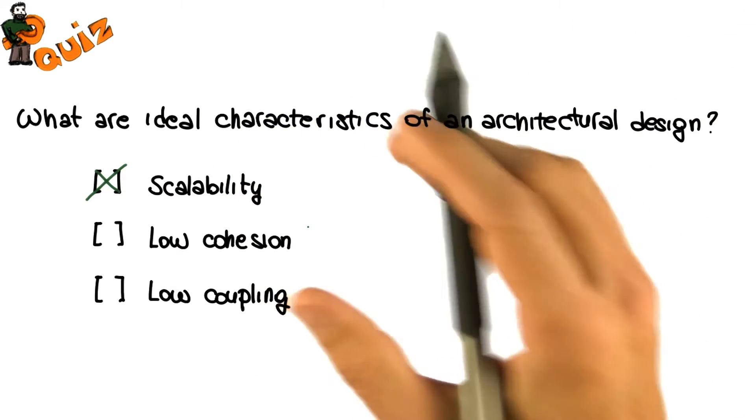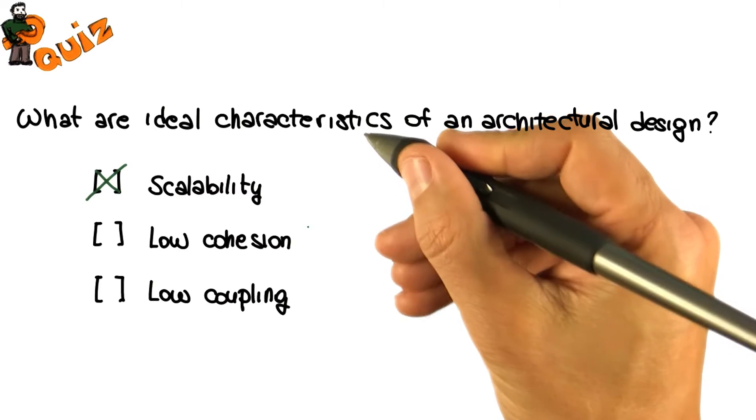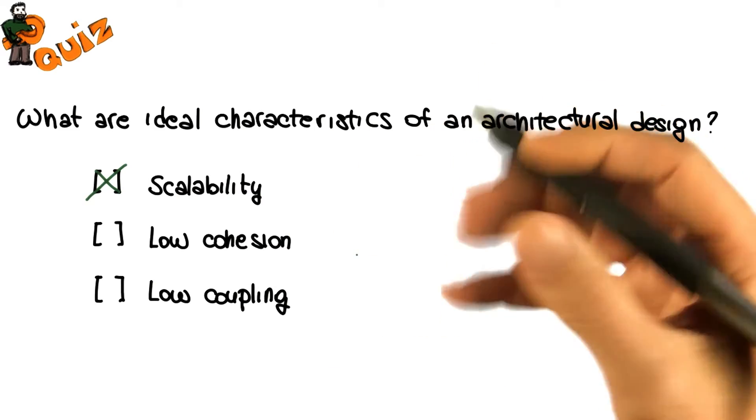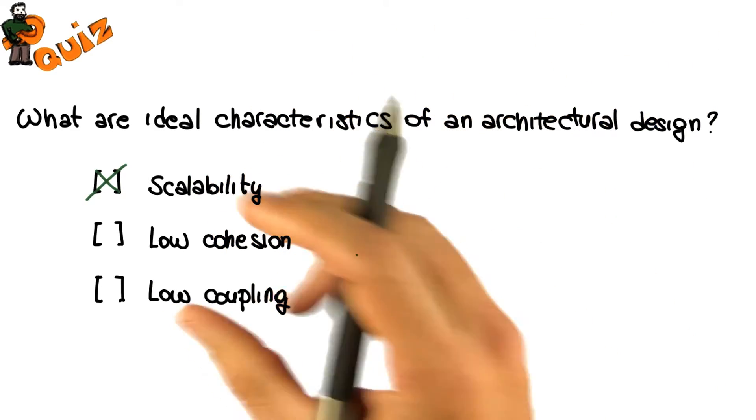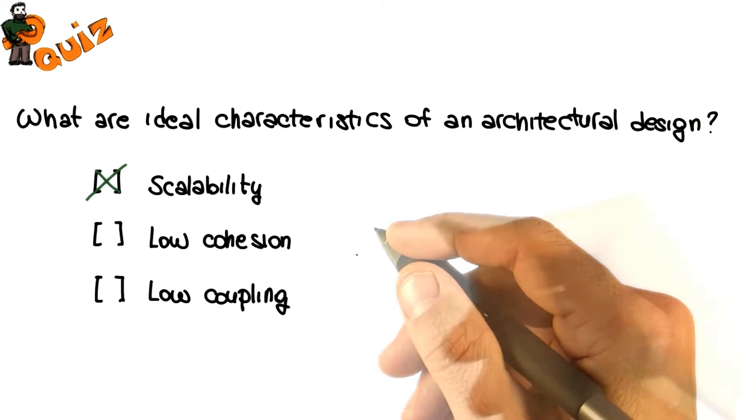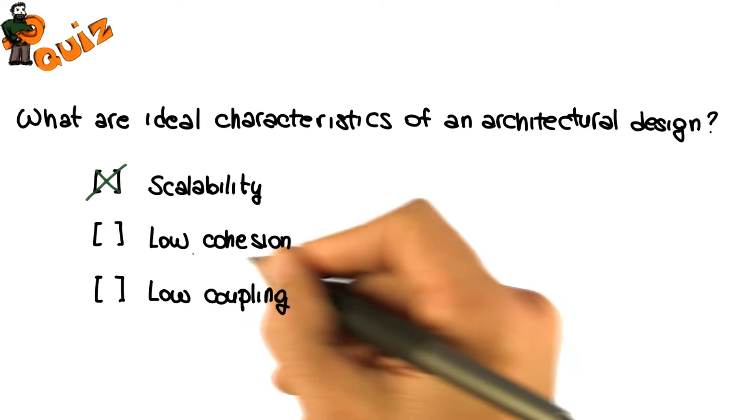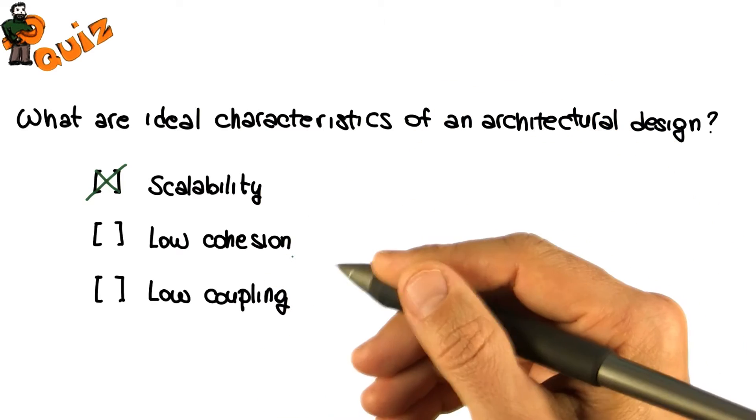We want to develop modules whose elements cooperate to provide a specific piece of functionality, rather than modules consisting of a bunch of elements that provide different, unrelated pieces of functionality. Therefore, low cohesion is definitely not something that we want. We want high cohesion instead.